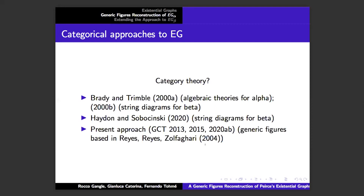So how does this get plugged into category theory? There have been a few different projects. Brady and Trimble, in a pair of articles in 2000, worked with both alpha and beta in two excellent papers. Very recently, Hayden and Soboczynski published a nice paper expressing beta in terms of string diagrams and Frobenius algebras. Our approach is quite different — more meat-and-potatoes category theory. We're using the generic figures approach from the book by Reyes, Reyes, and Zolfagari.